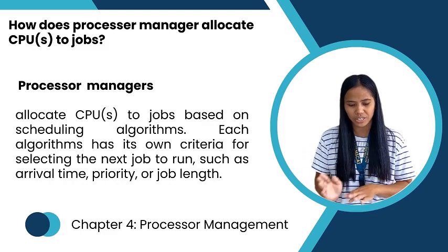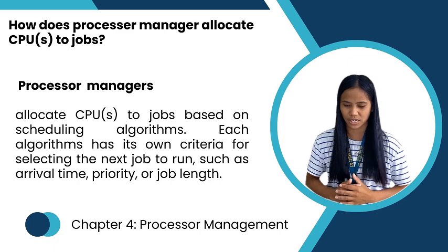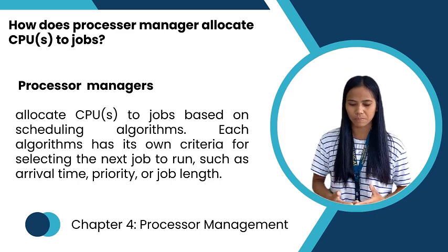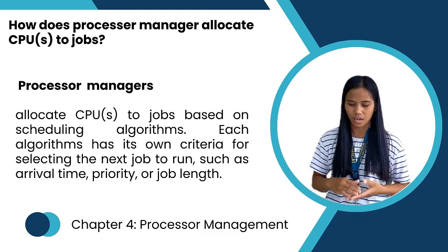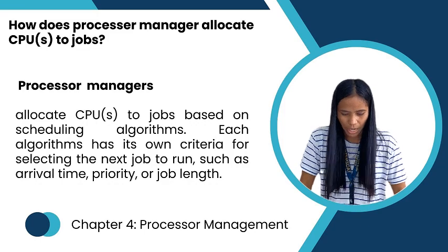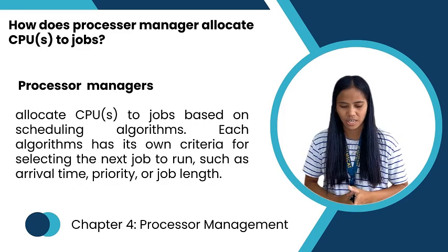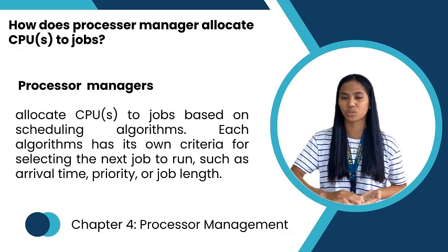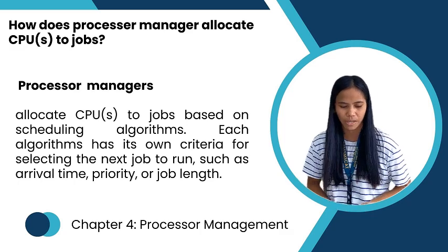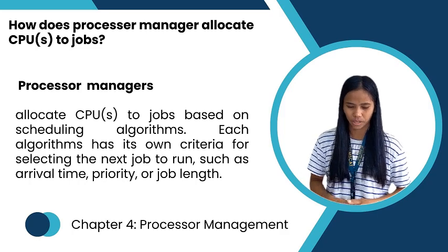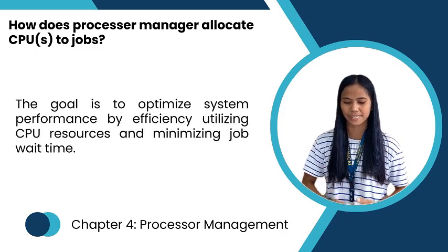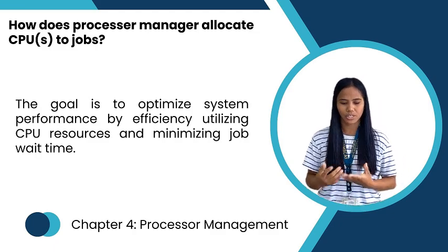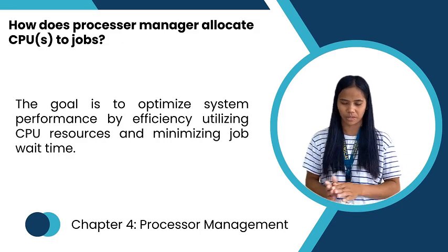The processor manager allocates CPUs to jobs based on scheduling algorithms. Each algorithm has common criteria for selecting the next job to run, such as arrival time, priority, or job length. The goal is to optimize system performance by efficiently utilizing CPU resources and minimizing job wait times.